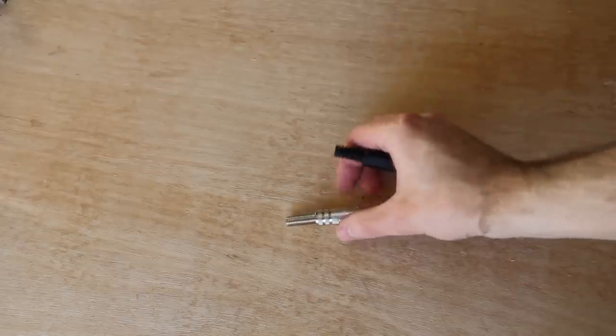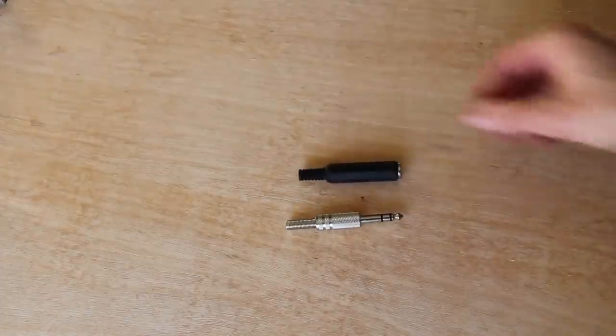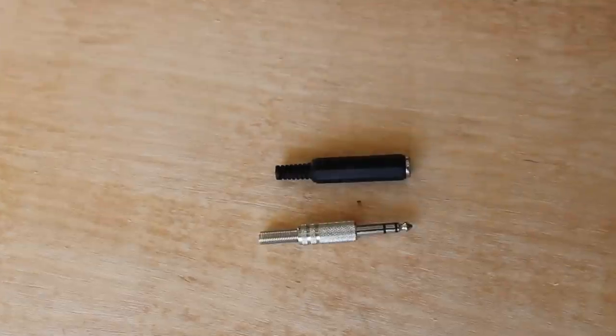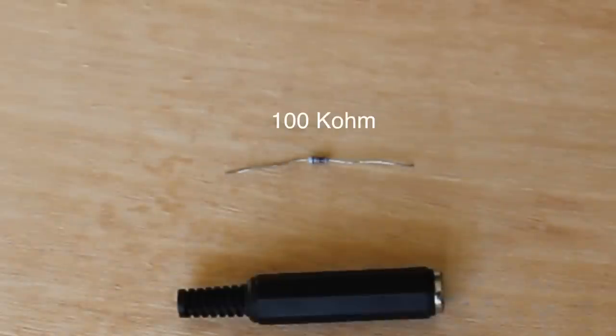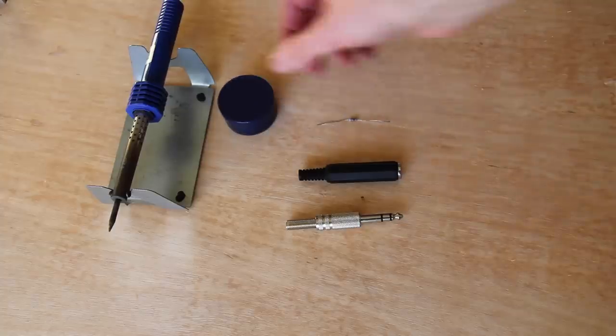You need a 6.3mm stereo jack connector, the one with three rings, or depending on your kit, a female or male one. A 100 kilo ohm resistor and a soldering tool.